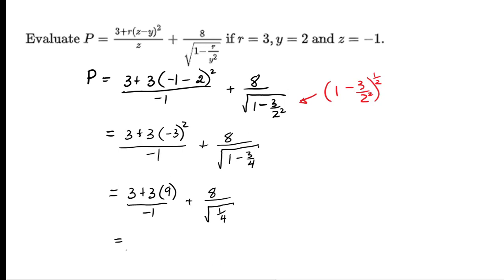Now simplifying further, the numerator in the first fraction, we have to do multiplication before we can do addition. And if we take square root of one over four, this could be treated as square root of one divided by square root of four, which gives us one half.